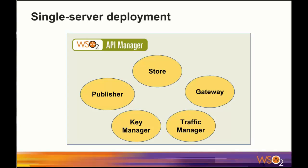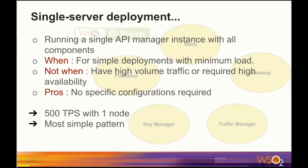Now let us explore how scalability relates to the basic deployment types of WSO2 API Manager. Single server deployment, which is the most simple pattern, has just a single API Manager instance with all components running in it. We normally use single server deployment for simple deployments with minimum load. The advantage is that it requires no specific configuration, making it very simple. In normal conditions, this can manage up to 500 transactions per second. But if the required TPS exceeds that, we have to find another option.